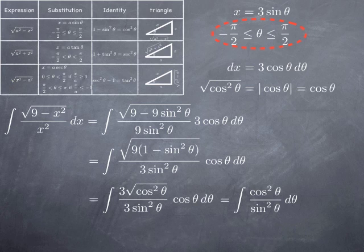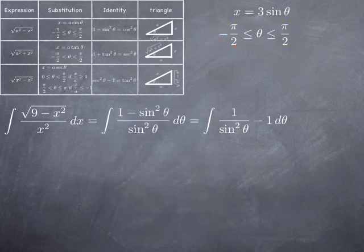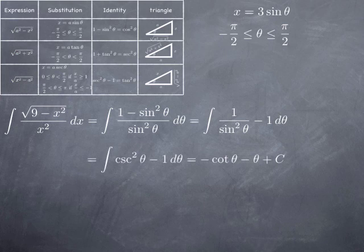We can use the identity again and write cosine squared as 1 minus sine squared, then split the fraction: 1 over sine squared minus sine squared over sine squared, which is 1 over sine squared minus 1. This is the integral of cosecant squared theta minus 1. The antiderivative of cosecant squared is negative cotangent, and the antiderivative of 1 is theta. So we have found the antiderivative of root of 9 minus x squared over x squared as a function of theta, and now need to convert back to x.